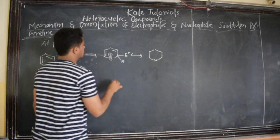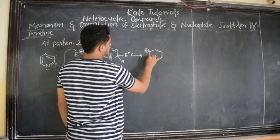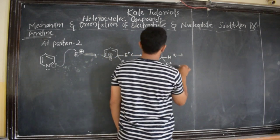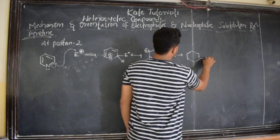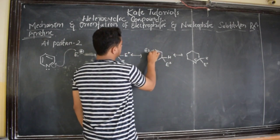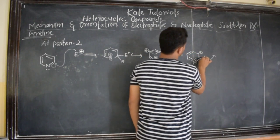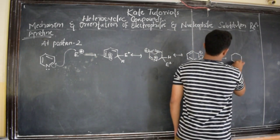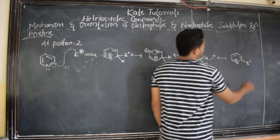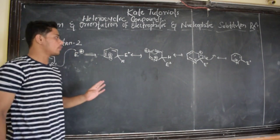What happens next is this electron pair will shift here and positive charge will be here. This carbon gets positive charge, double bond will be here, double bond will be here. And here we have H and E+. Then the next canonical structure will be like this: here we have H, here we have E+, and nitrogen gets positive charge — nitrogen is highly positively charged. Then this H+ leaves, the electron will shift, and we get the product. But there is a positive charge on nitrogen, which is highly unstable because an electronegative atom cannot have any positive charge.